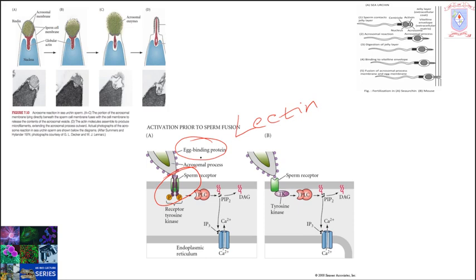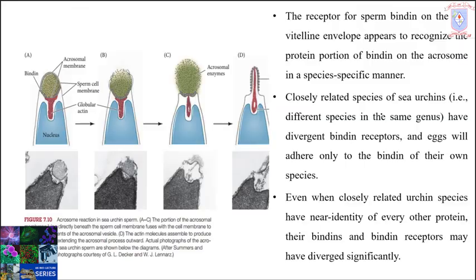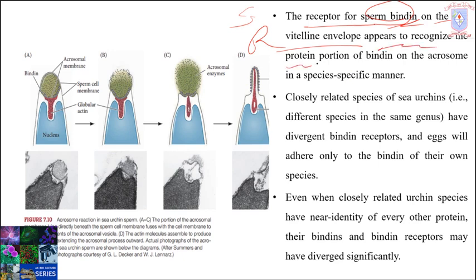Bindin has two functions: the first is to bind with a specific receptor on the egg of the same species, and the second is in the fusion of the egg and sperm membrane. The receptor for the sperm bindin protein is on the egg vitelline envelope, while the ligand — bindin — is on the sperm. The receptor for the bindin protein on the egg vitelline envelope appears to recognize the protein portion of bindin on the acrosome in a species-specific manner.